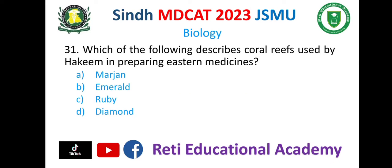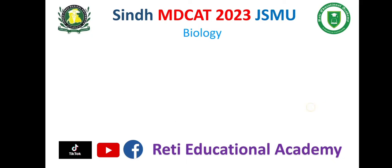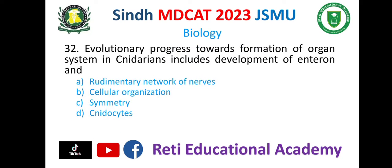Question number 31. Which of the following describes coral reefs used by Hakim in preparing eastern medicines? Options are A. Marjan, B. Emerald, C. Diamond. The correct option is A. Marjan.